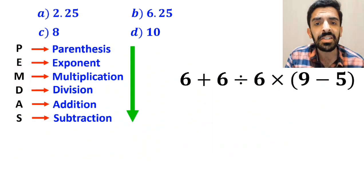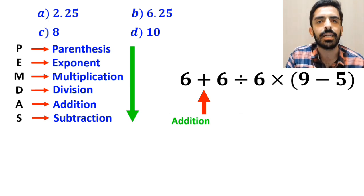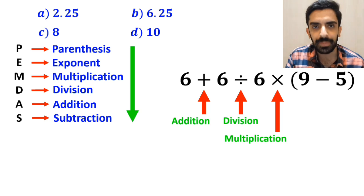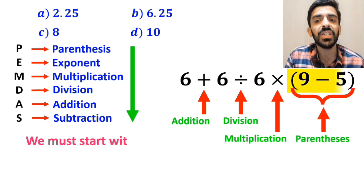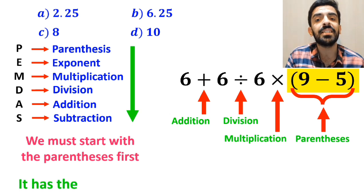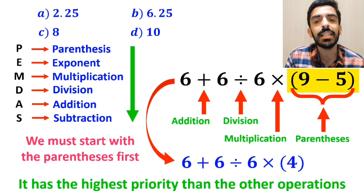All right, as you can see in the image, in this expression first we have an addition sign, then a division sign, followed by a multiplication, and finally parenthesis. We must start with the parenthesis first, because it has the highest priority. So, instead of this expression, we can write 6 plus 6 divided by 6 times 4.